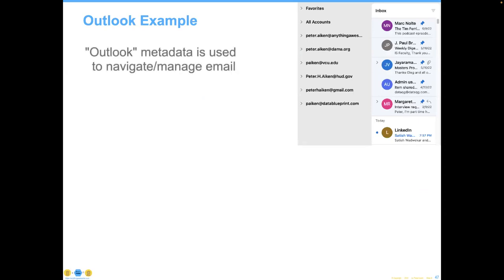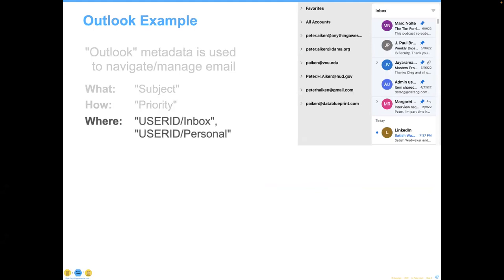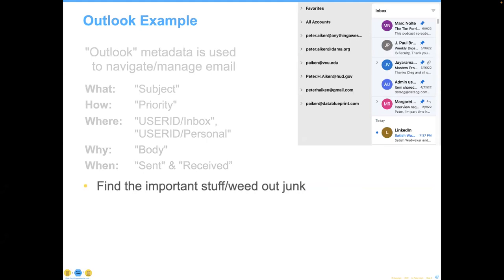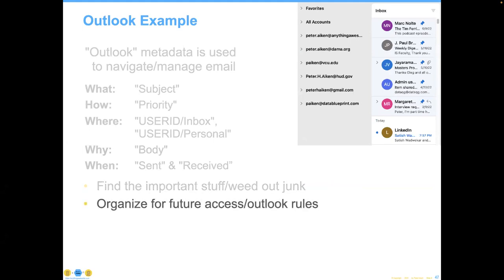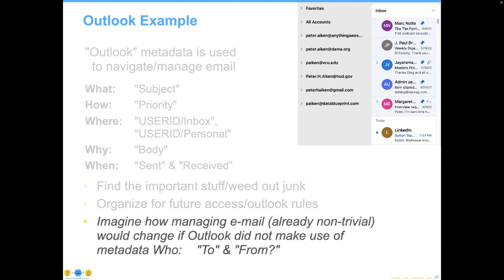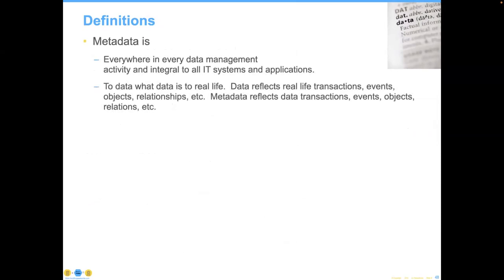If you look at Outlook, it will do the same kind of thing. Here's a screenshot from my Outlook in the upper right-hand corner. The what information gives me the subject, the priority, user ID in my inbox; the why is the body of the letter; the when is the sent and received. I use Outlook to weed out important stuff so I can find the good stuff among all the junk. I can organize future access with a series of Outlook rules so that anytime something comes in from one of my bosses, it goes straight to the top of my inbox. Just imagine trying to manage email if Outlook did not make use of the metadata — the who, from, and to. It would be very, very difficult. So metadata is everywhere in all of our systems.